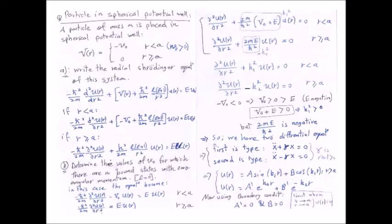To solve this problem, we only need the radial Schrödinger equation. Why? Because this problem has spherical symmetry — there is no dependence on theta and phi, just dependence on r. So writing and solving the radial Schrödinger equation will give us all the information we need.